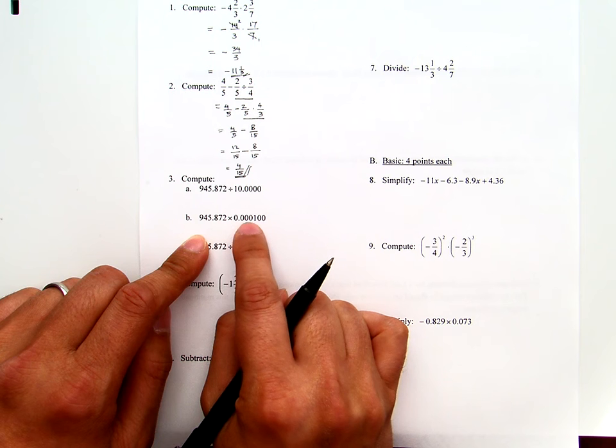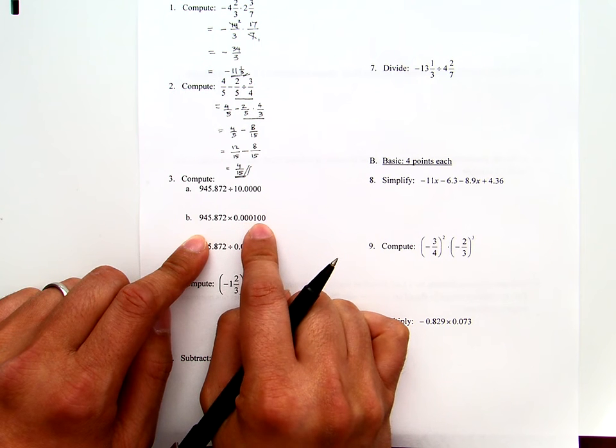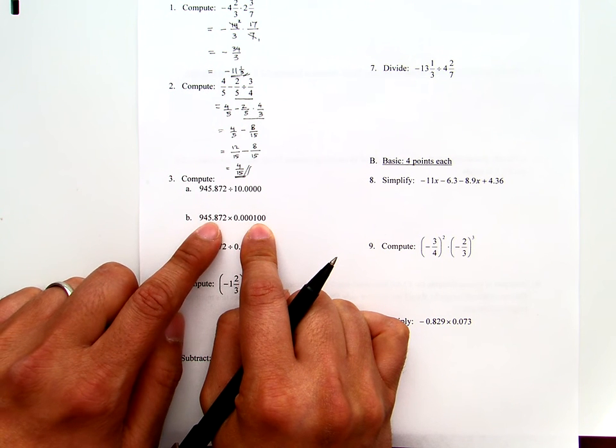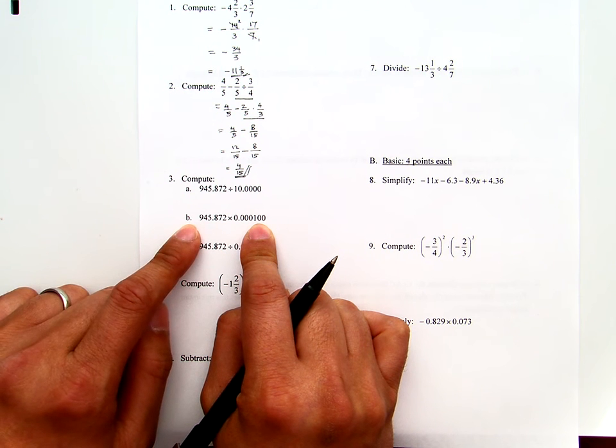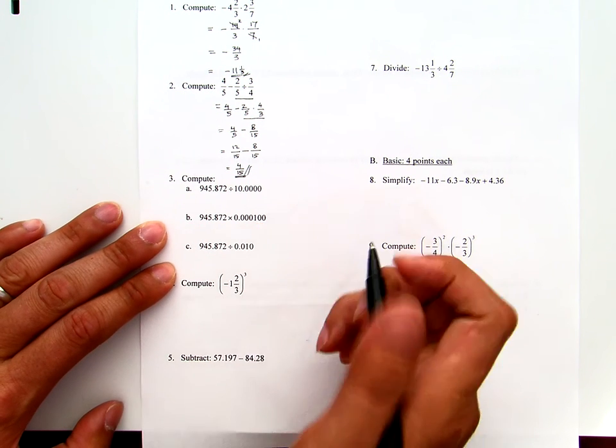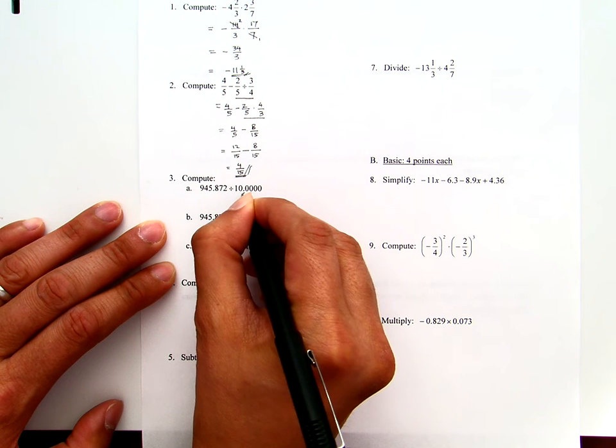Here, the decimal point will move four times to the right to make it one. Therefore, the one here will move four times to the left to compensate that. Now let's execute this. I will move this one to the left.